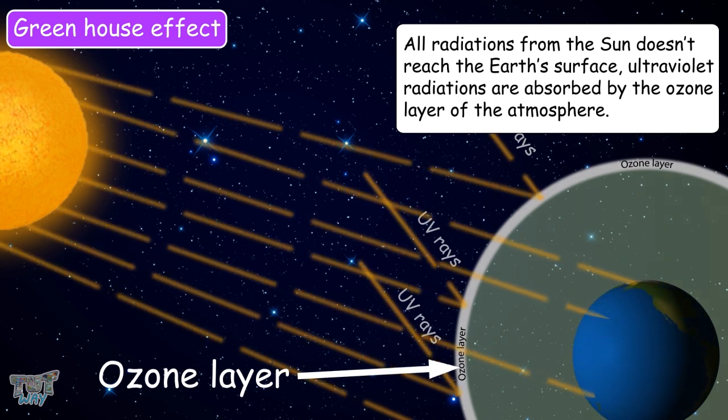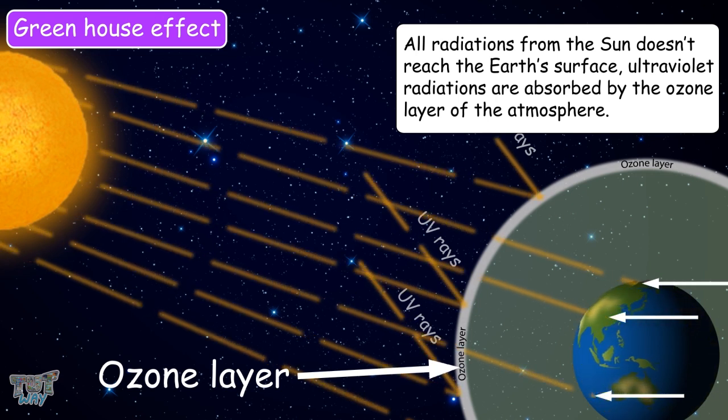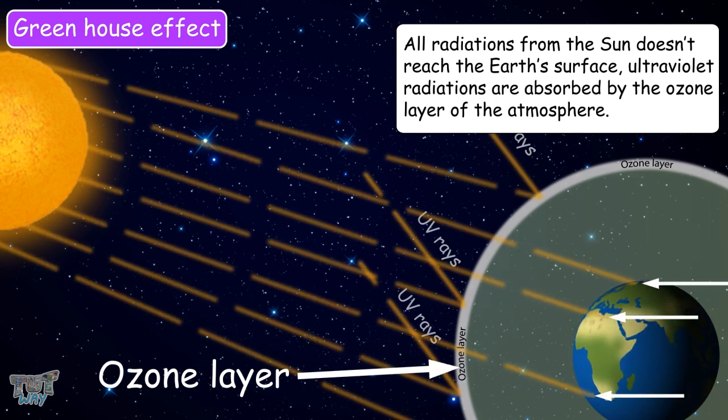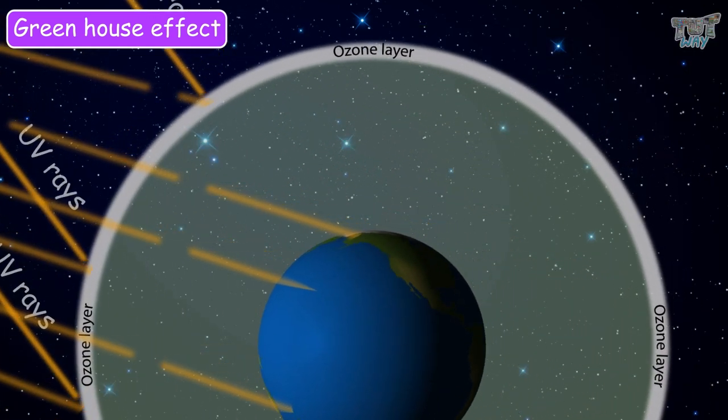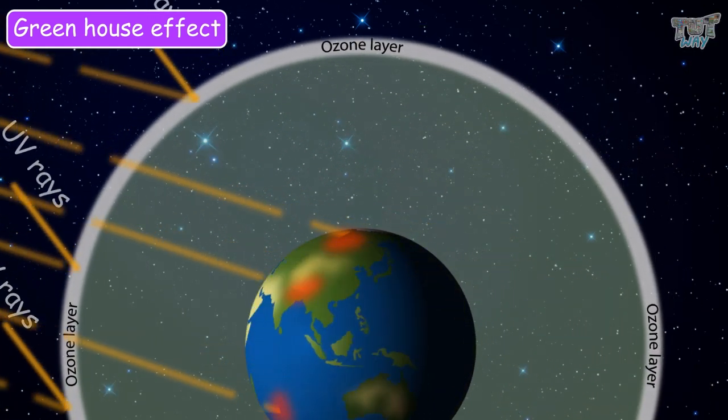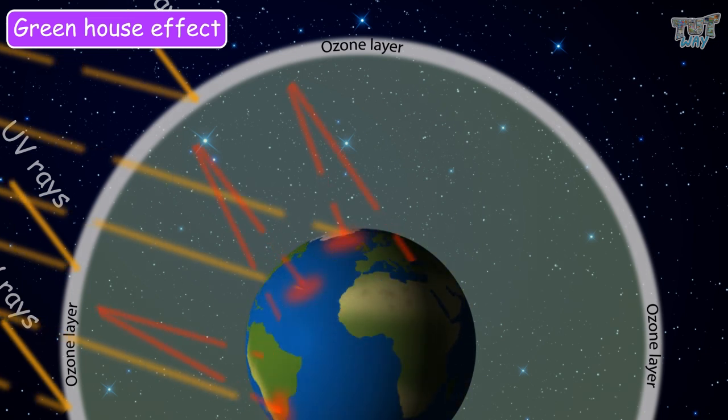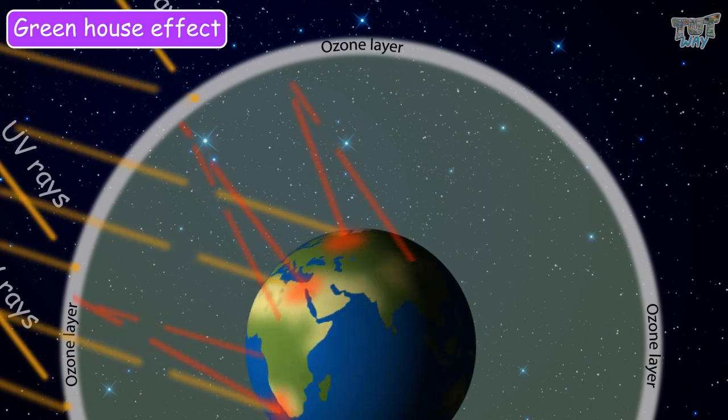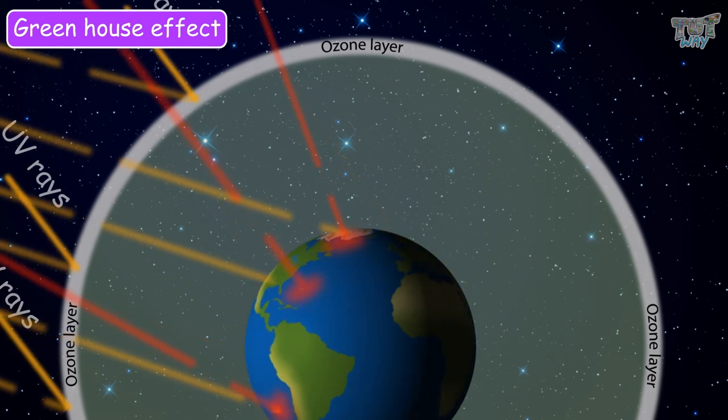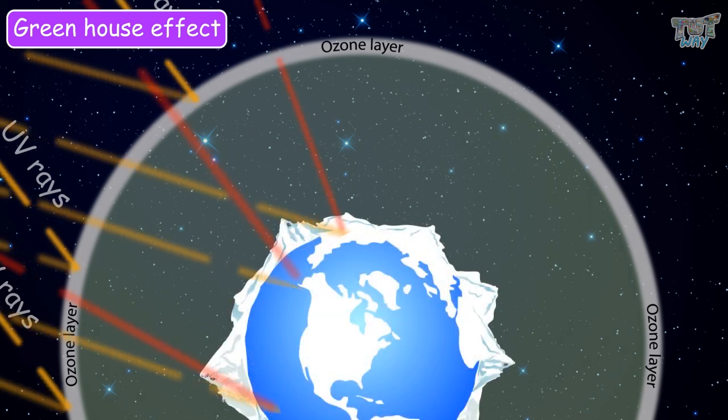And the radiation that reaches the Earth's surface warms the Earth's surface. And then the heated Earth's surface radiates the heat energy in the form of infrared radiation. And if all the radiation is allowed to escape the atmosphere of the Earth, the Earth would be unimaginably cold and life would not be possible on Earth.